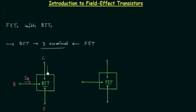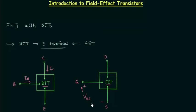In a BJT, the input current IB flows from the base into the transistor, and the collector current is denoted as IC. But in a FET, the first terminal is denoted as gate, the second terminal is drain, and the final terminal is source. Here, the input voltage between the gate and source — the gate-source voltage VGS — defines how much output current ID is attained at the drain terminal.